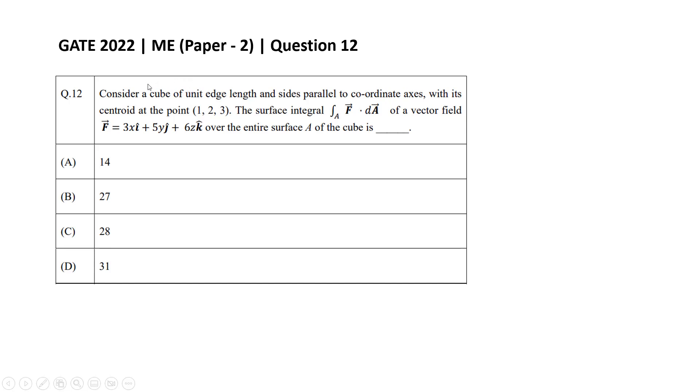Hello everyone, in this video we will solve GATE 2022 ME Set 2, Question Number 12. This question is from vector calculus of engineering mathematics. The question is: Consider a cube of unit edge length and sides parallel to coordinate axes with its centroid at point (1, 2, 3). The surface integral of a vector field F = 3x i-cap + 5y j-cap + 6z k-cap over the entire surface area of the cube is... and these are the four options.